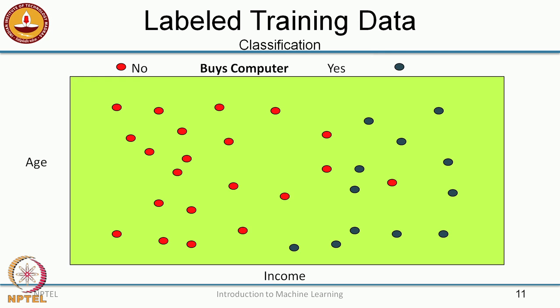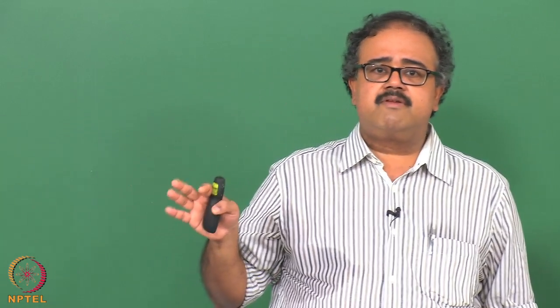We talked about classification where the output is a discrete value — in this case it is yes or no: yes means the person will buy a computer, no means the person will not buy a computer. The input is described through a set of attributes — in this case age and income. The goal is to come up with a function, a mapping that takes age and income as input and gives an output saying whether the person will buy the computer or not.